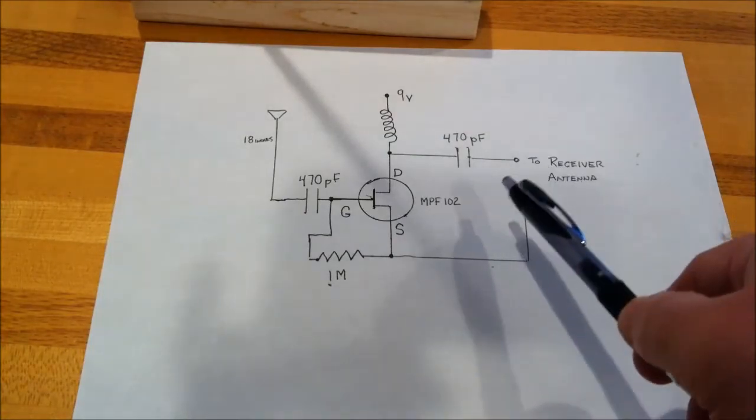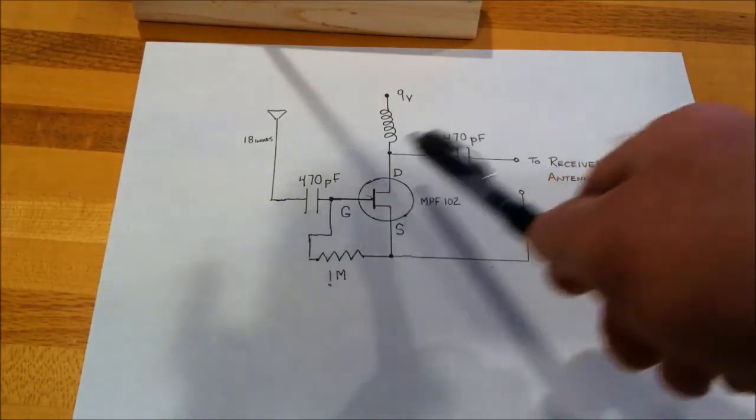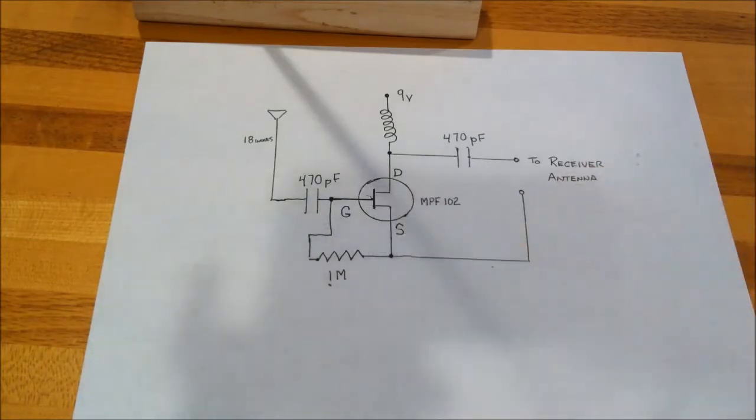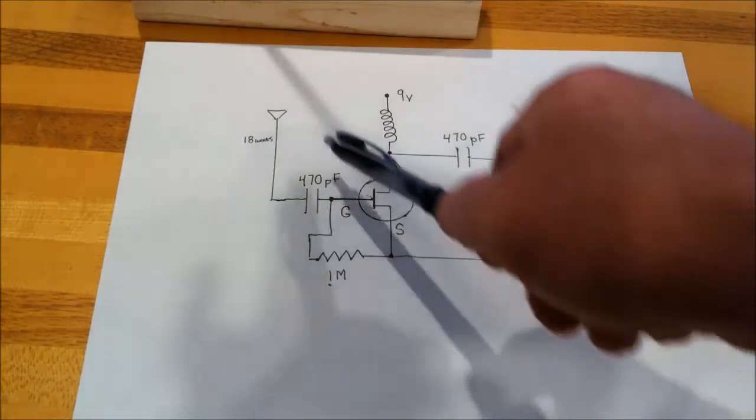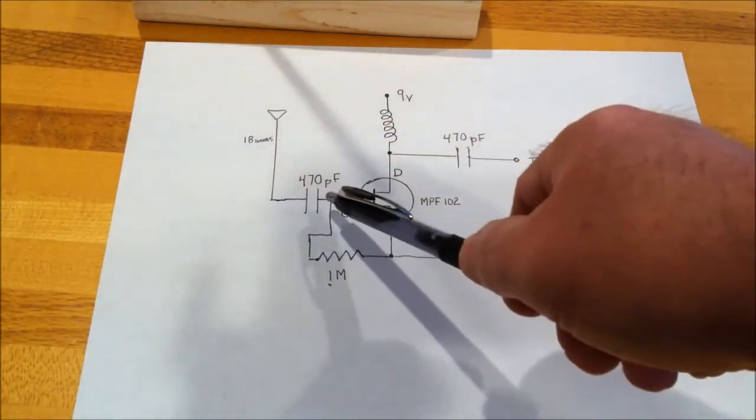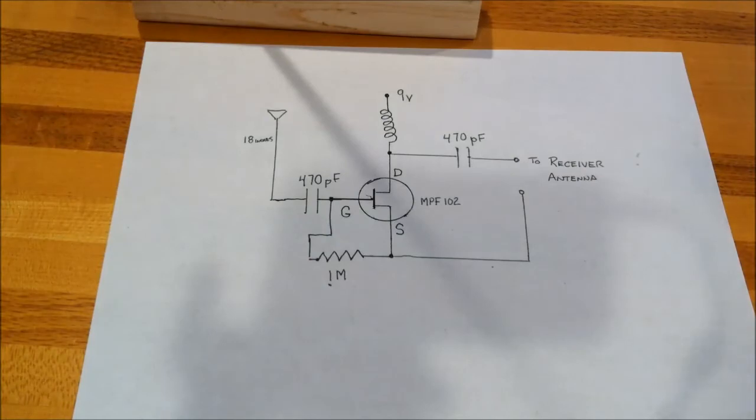You also have two capacitors, one for the input, one for the output, both 470 picofarads, a biasing resistor of one megaohm, an input from the antenna, and basically you can use a wire capacitor or a rod of about 18 inches.